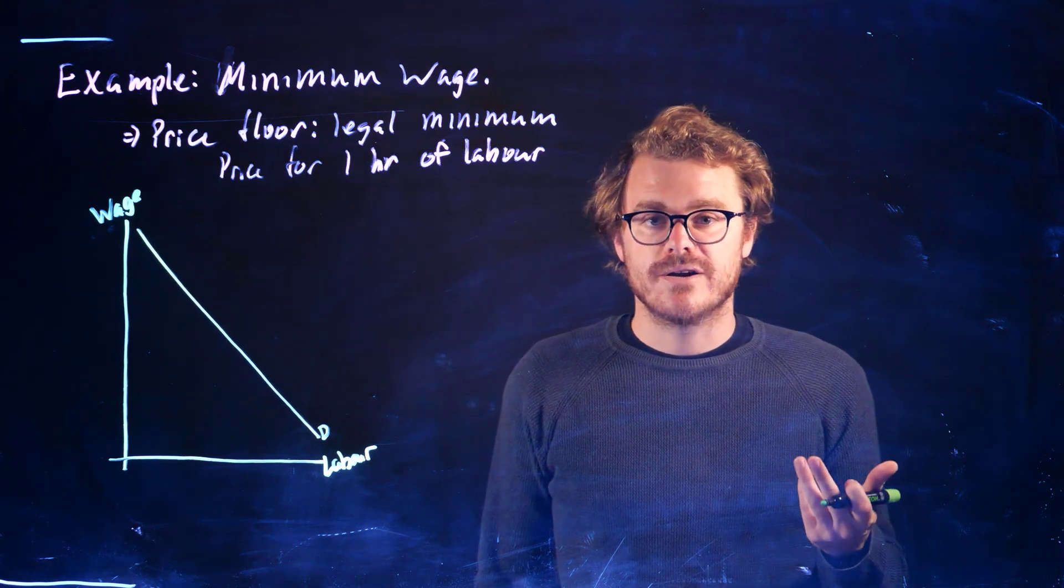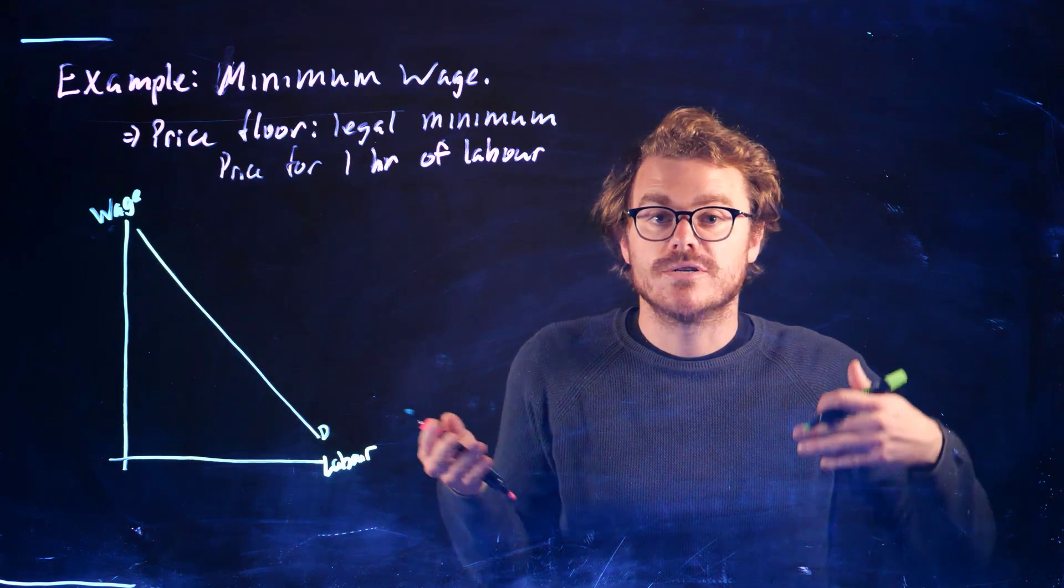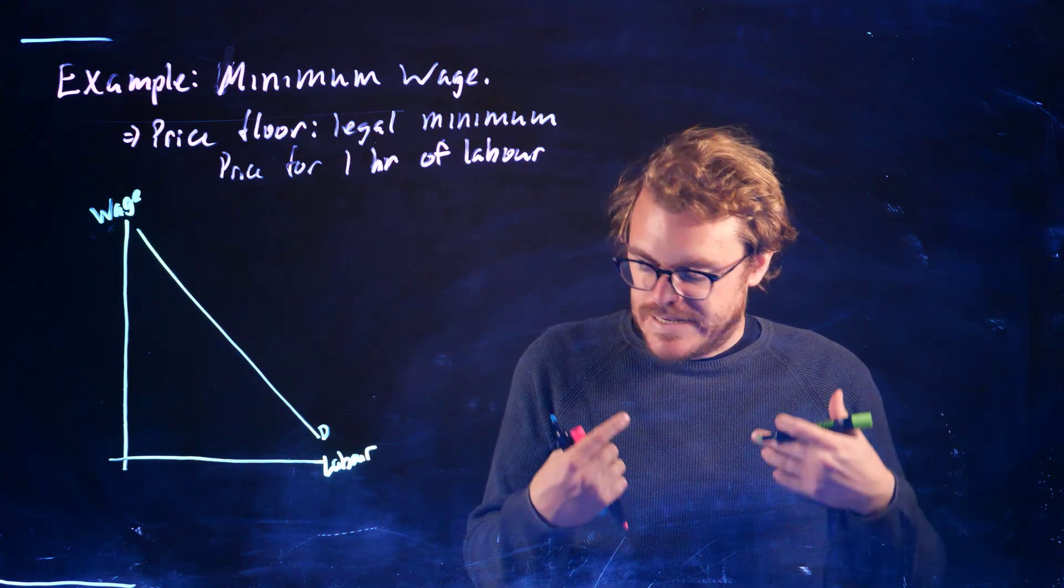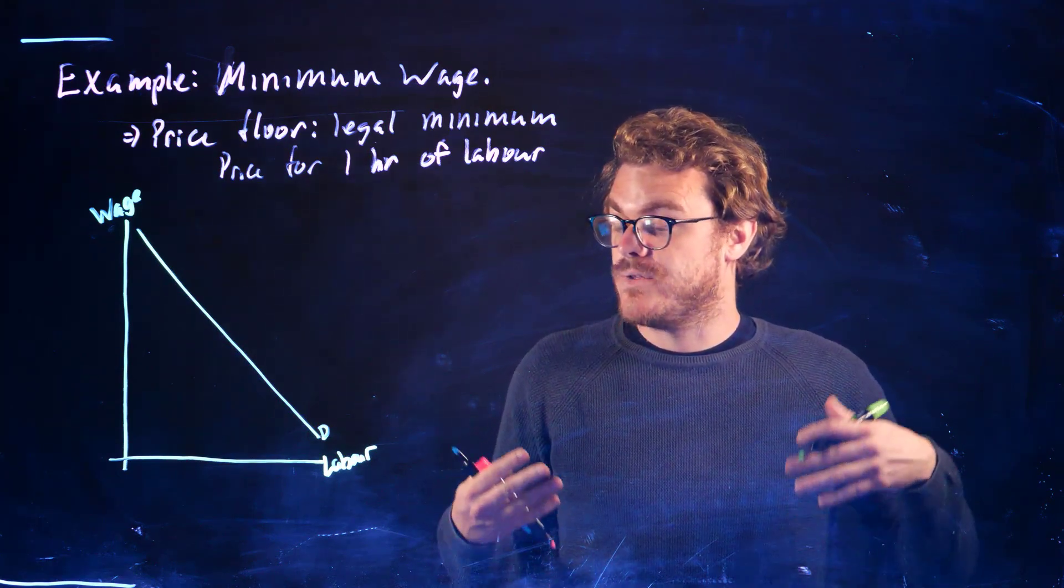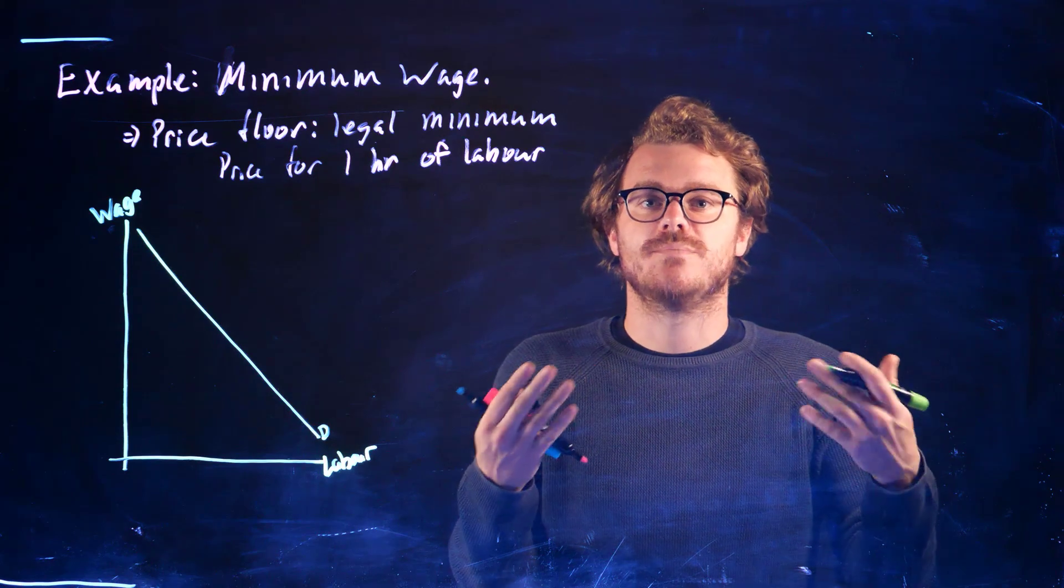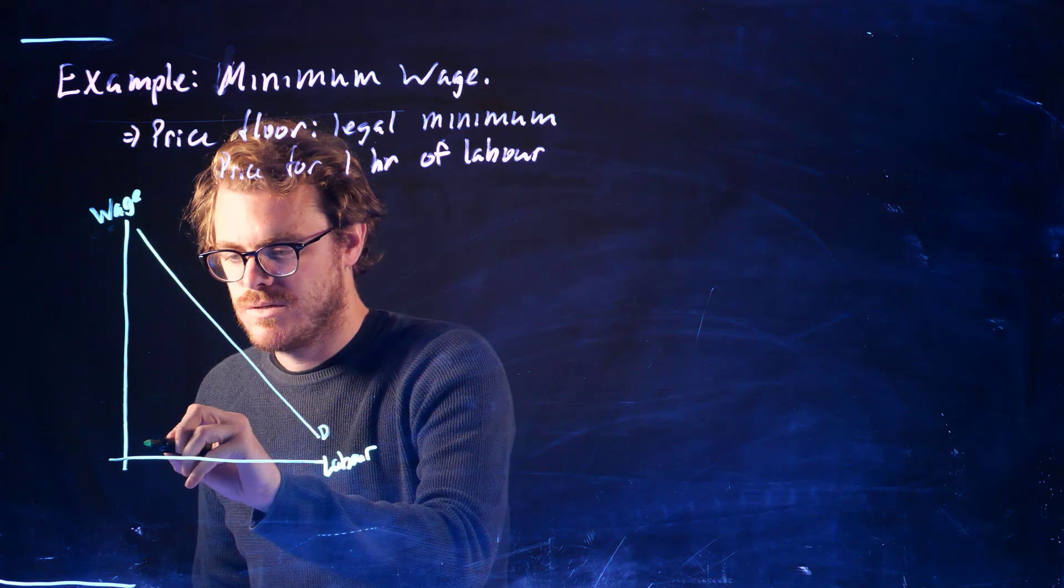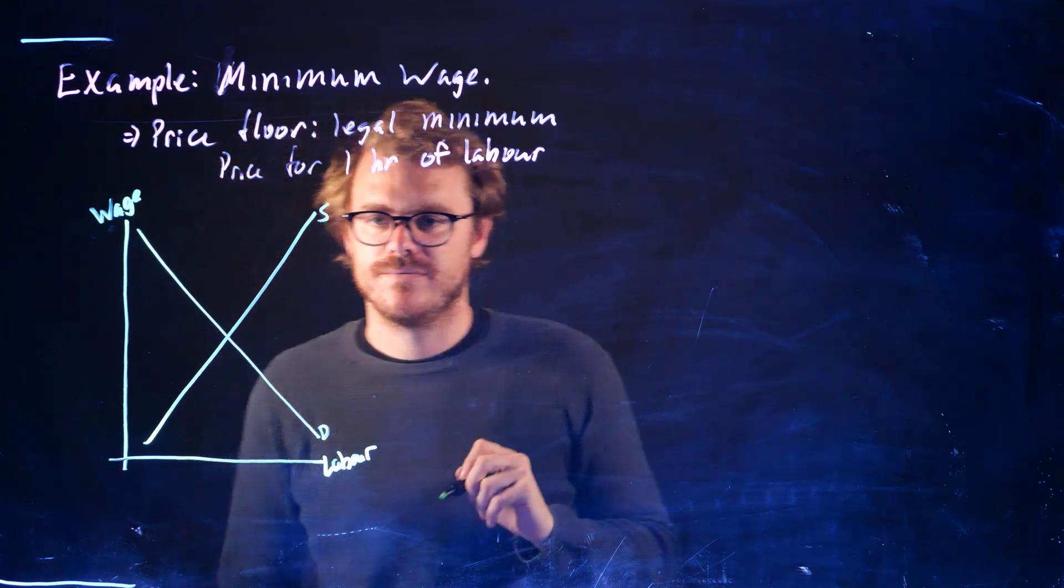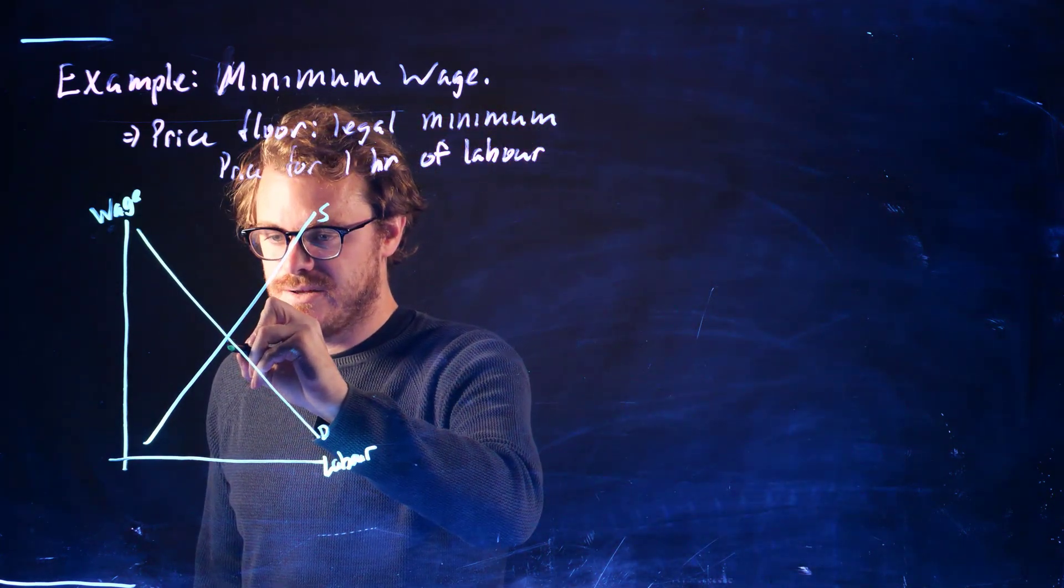Let's think about the suppliers of labor - that's workers. So if you're going to work, you're a supplier of labor. If we put ourselves in workers' shoes, the higher the wage, the more labor that we're willing to supply, the more people that are willing to work for that wage. So we have this upward sloping supply curve for labor.